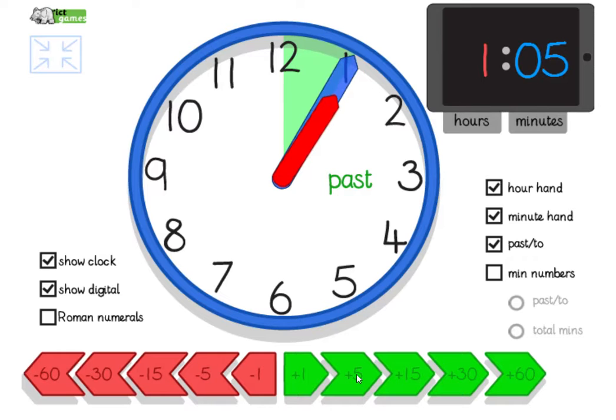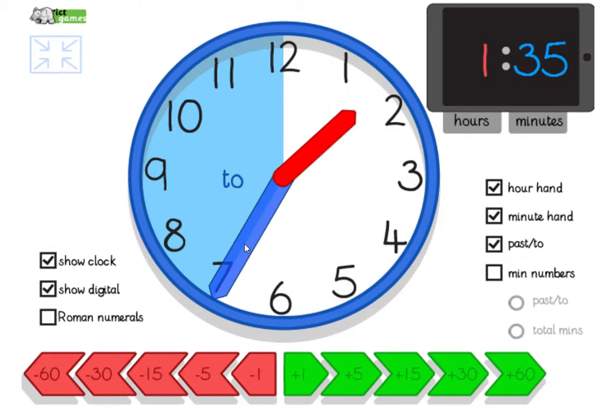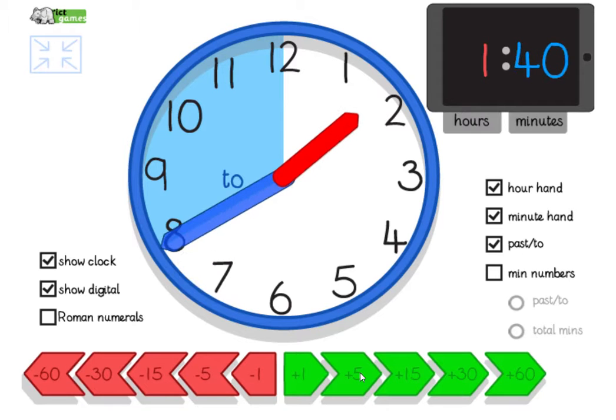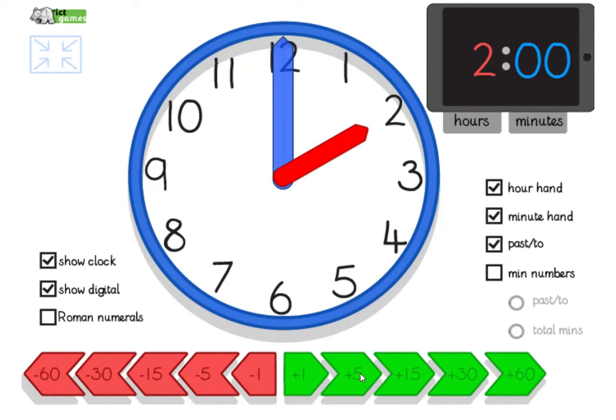Okay. Five past one, 10 past one, a quarter past one, 20 past one, 25 past one, 30 minutes past one, or half past, 135. Oh, sorry. My buttons moved. Sorry. 140, 145, 150, 155, two o'clock. Okay. We'll leave that for now.